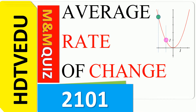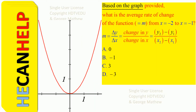Average rate of change. Based on the graph provided, what is the average rate of change of the function? Call it M from X equal to negative 2 to X equal to negative 1. M equals change in Y over change in X — that is Y2 minus Y1 divided by X2 minus X1.